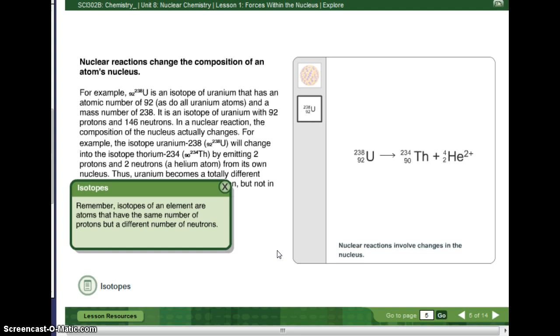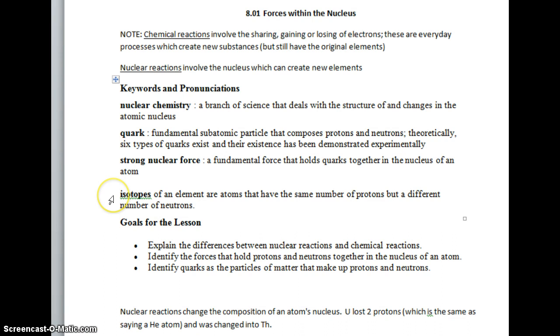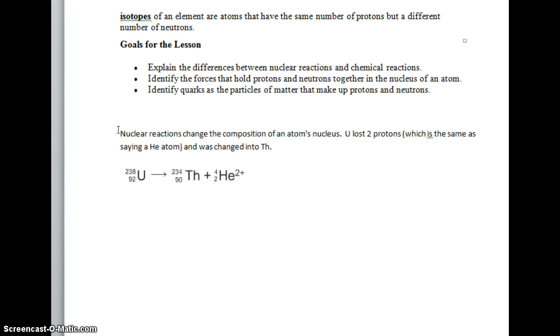Okay, so let's add some stuff to our notes. So, I added the word isotopes to our keywords and pronunciations. Isotopes of an element are atoms that have the same number of protons, but a different number of neutrons. And then I put down here, nuclear reactions change the composition of an atom's nucleus. Uranium lost two protons, which is the same as saying that it lost a helium atom. And it was changed into thorium.